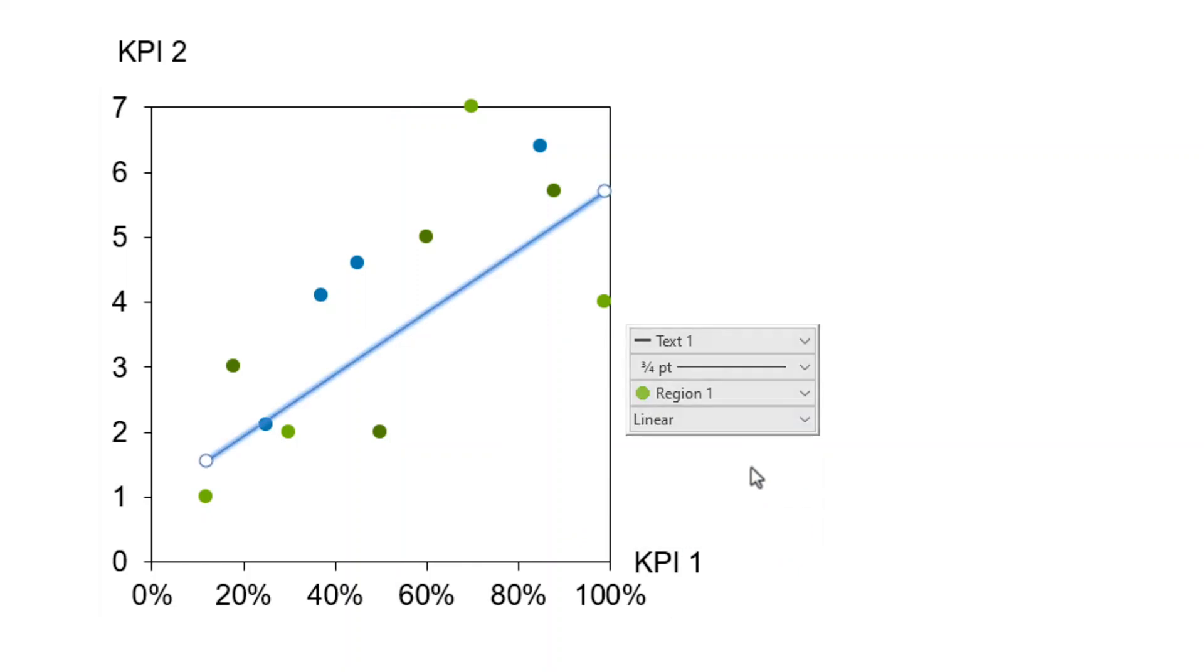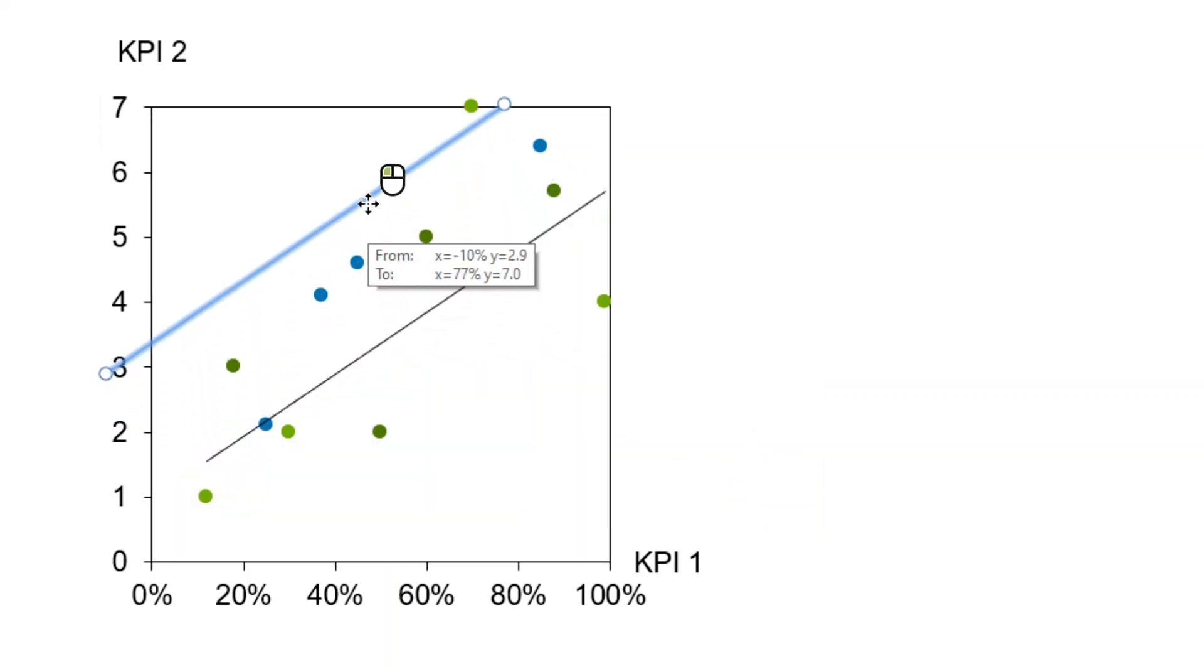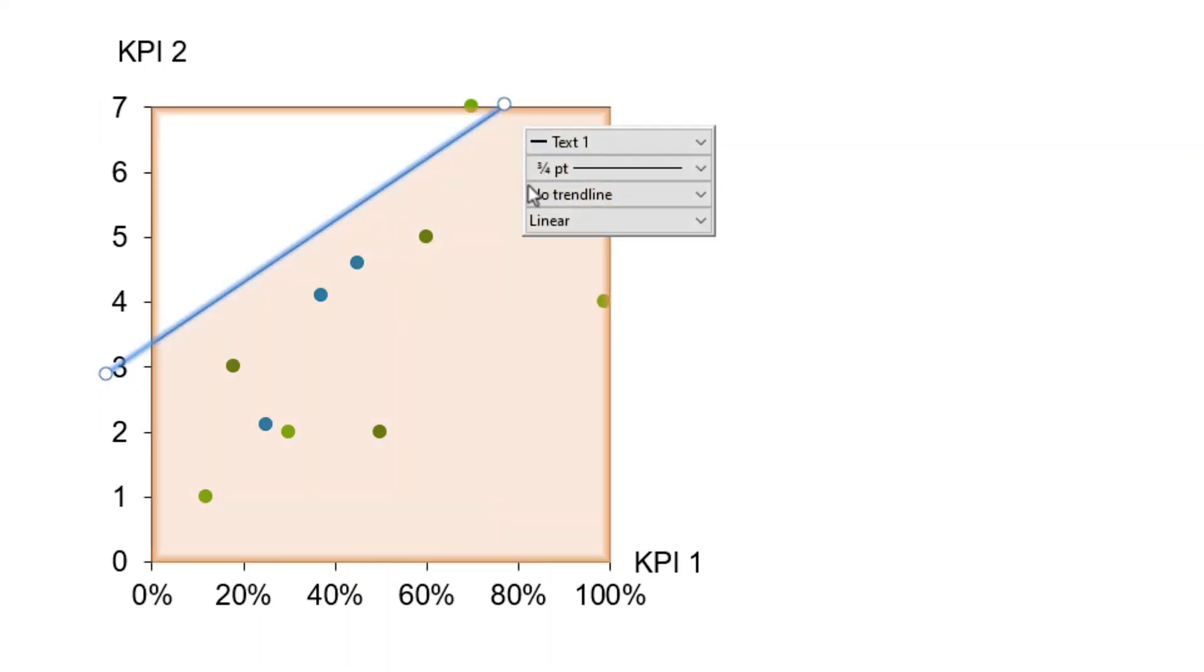To turn the computed trendline into a freely positioned partition line, just click and drag the line to the desired position. To transform it back into a trendline, left-click on the line, open the trendline group control, and choose which group of data points it should refer to.